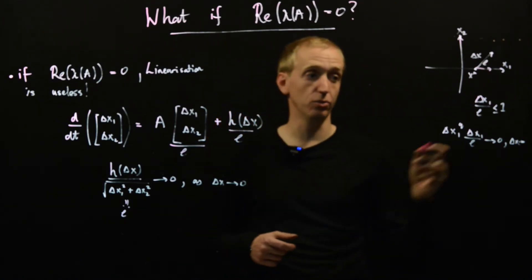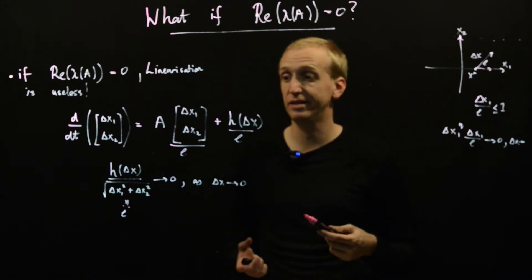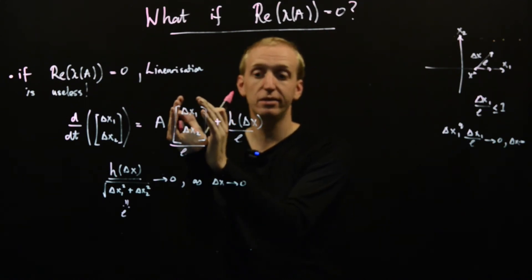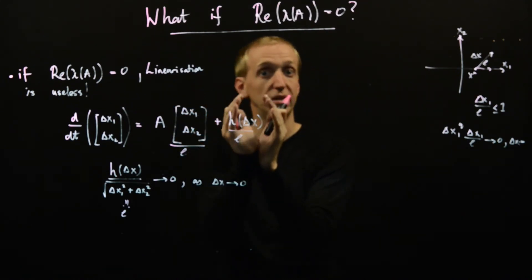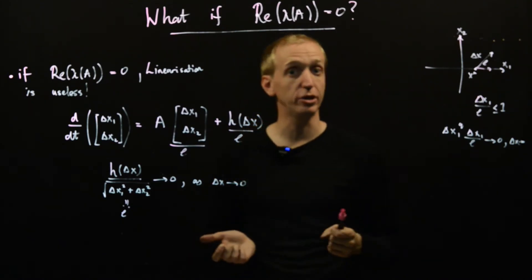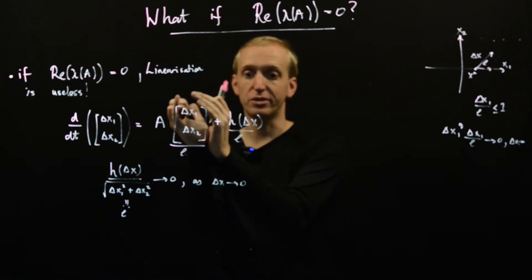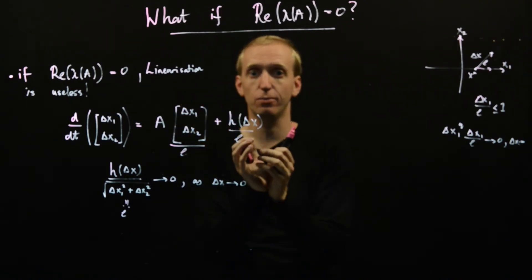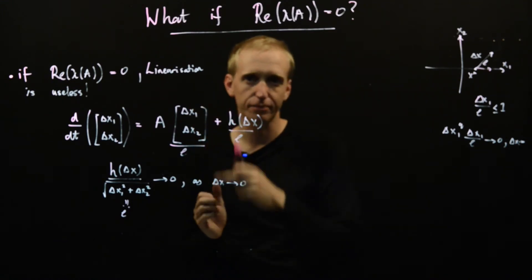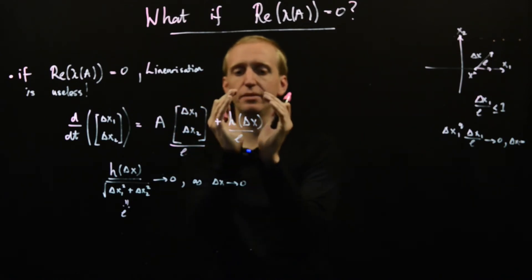And so what that means, and all of this is just a mathematical way of formalizing this idea, is that this term here, involving the delta x's, dominates this term as delta x gets small. And this is precisely the intuition behind the linearization. This linear term starts to dominate all of the other stuff, so that when delta x is really, really small, you just really need to look at the linear term. Okay, so this is always bigger than this.